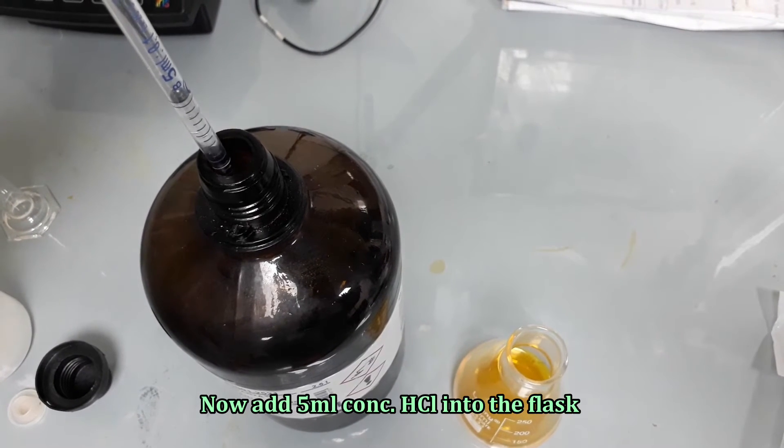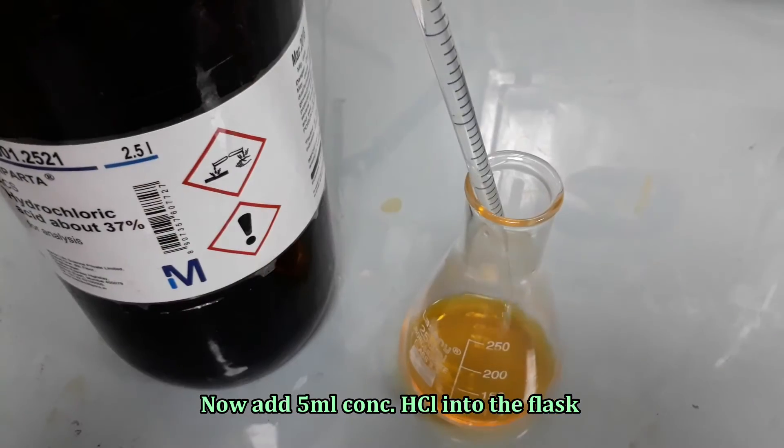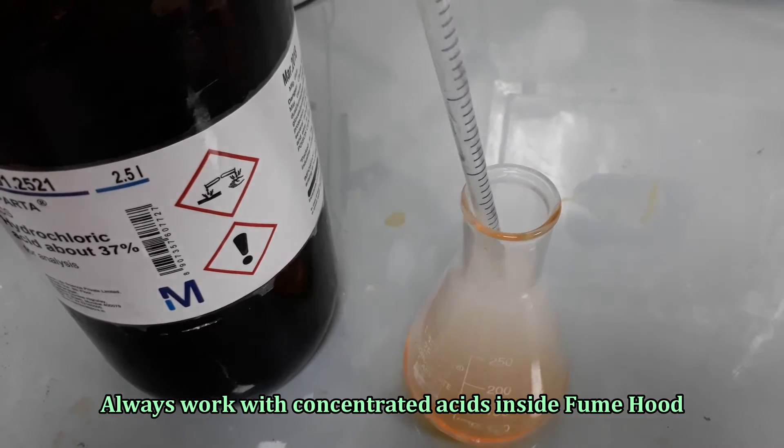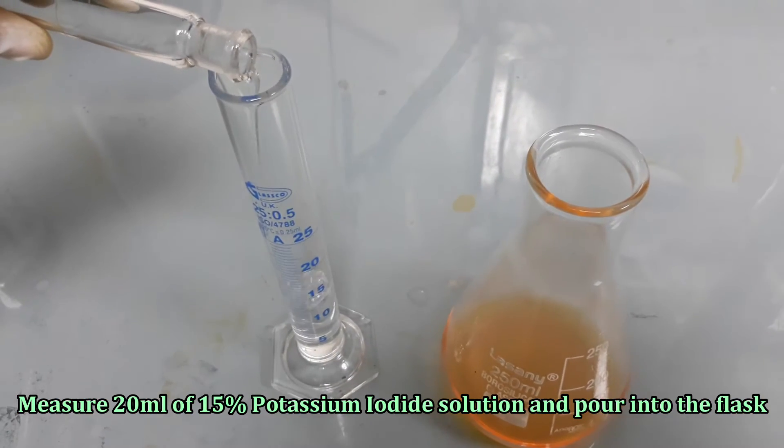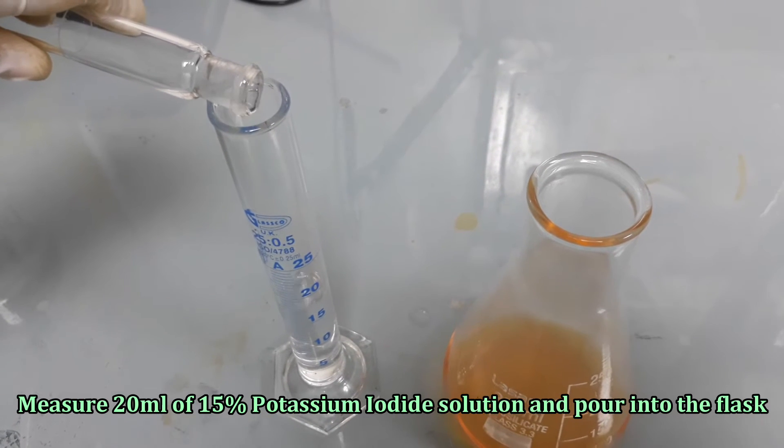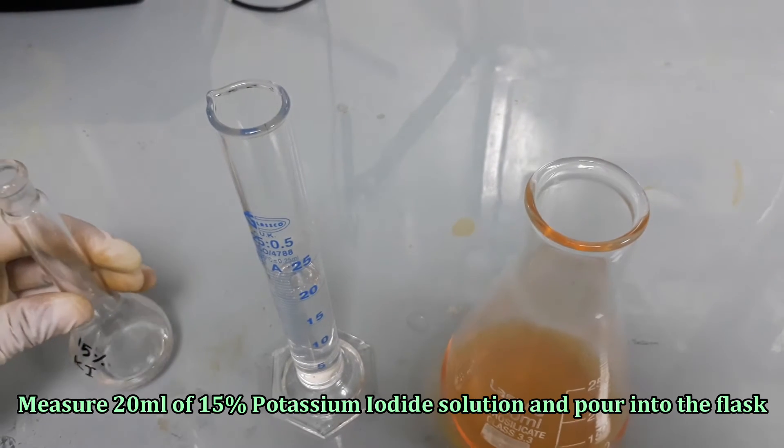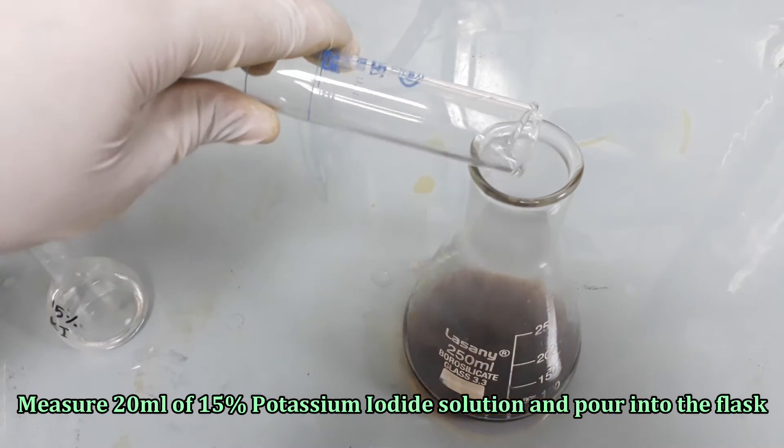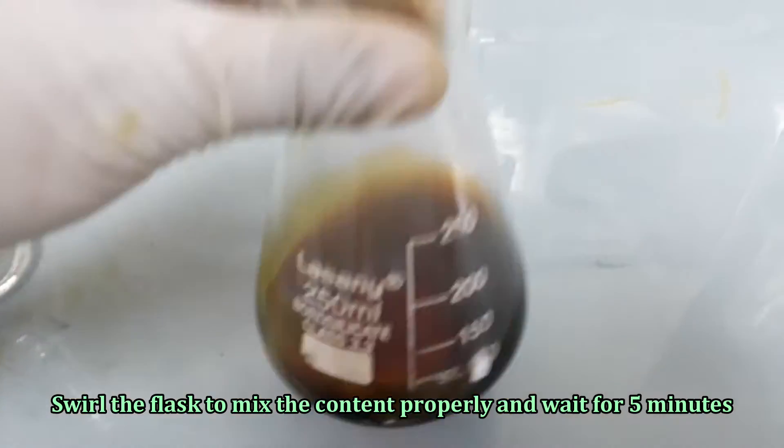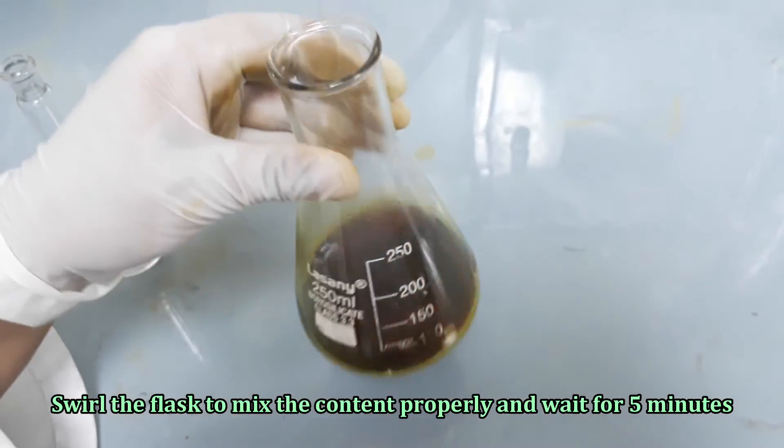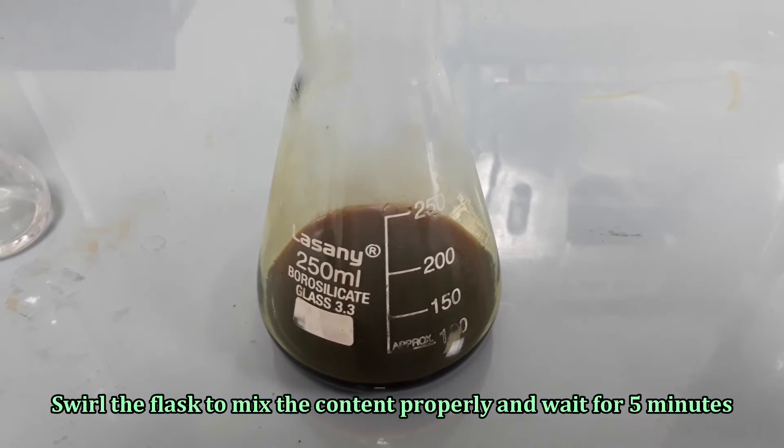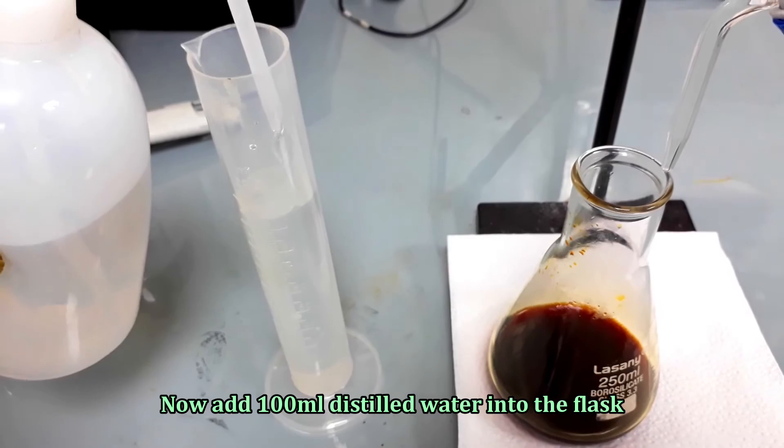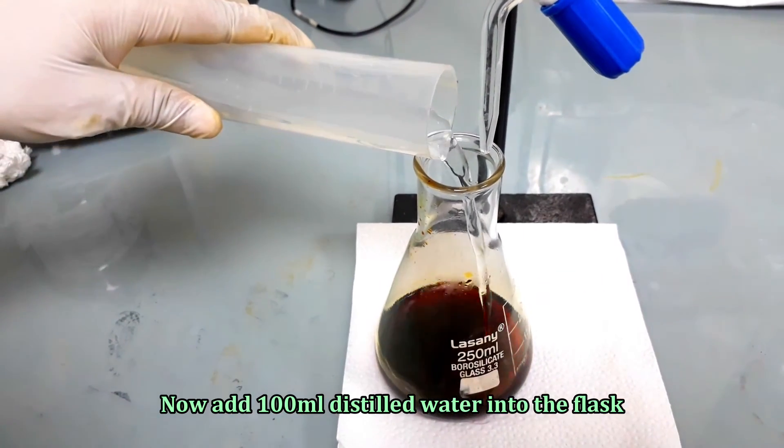Now, add 5 ml concentrated hydrochloric acid into the flask. Add 20 ml of 15% potassium iodide solution into the flask. Swirl the flask again and wait for 5 minutes. Add 100 ml distilled water and swirl the flask to mix the content properly.